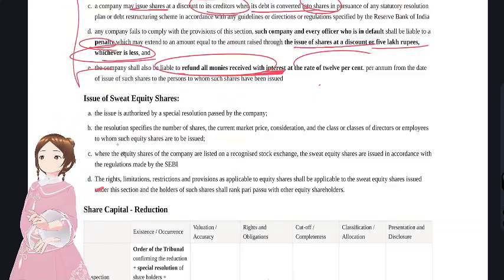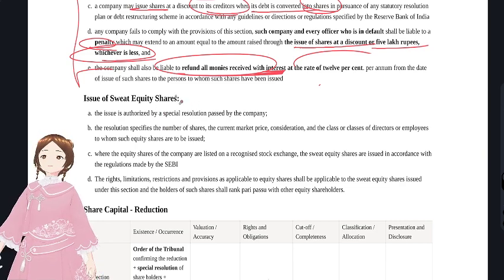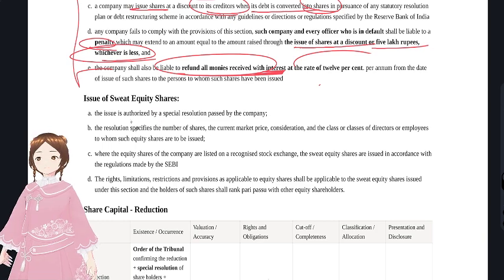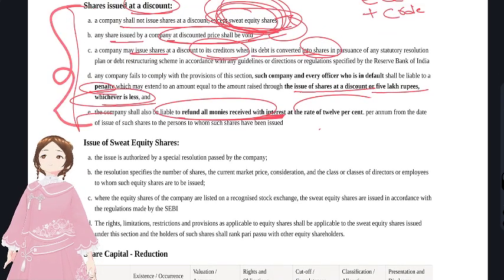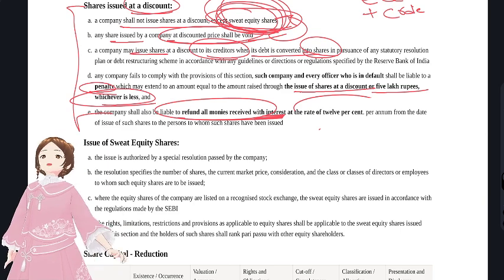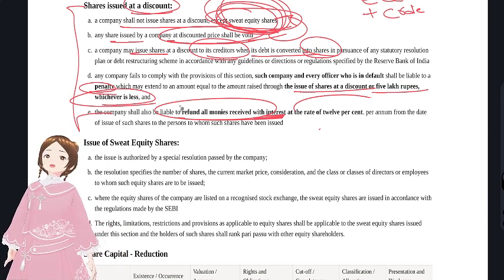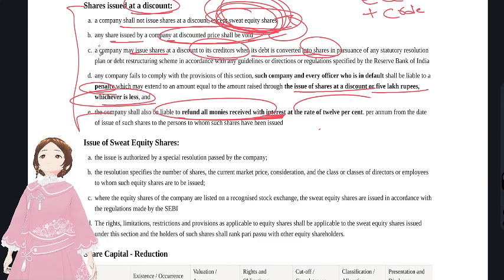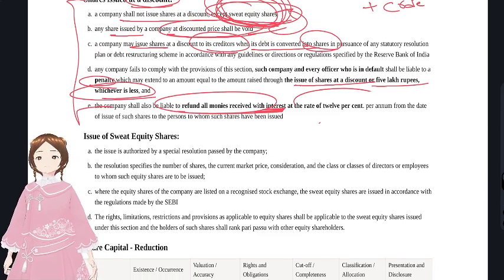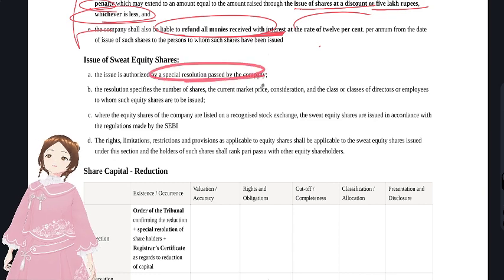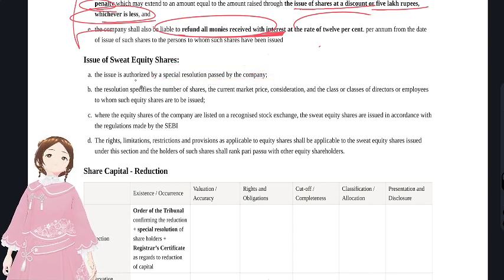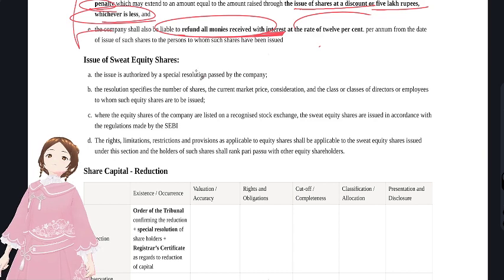Now we look at the conditions for issuing sweat equity shares. These are mostly legal compliance points - things the company must follow - and the auditor uses the verification weapon to check compliance. The issue must be authorized by a special resolution passed by the company. The auditor must inspect the resolutions and minutes.